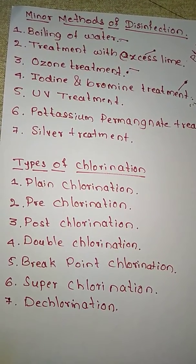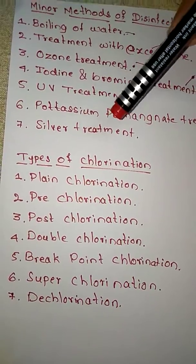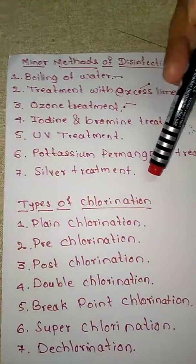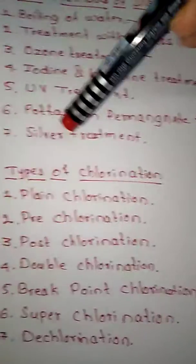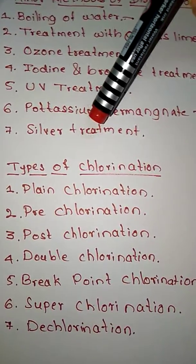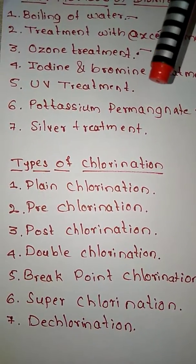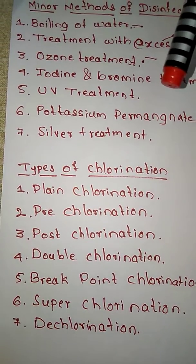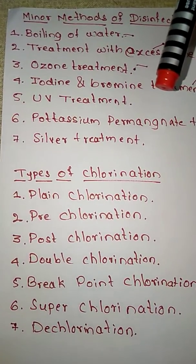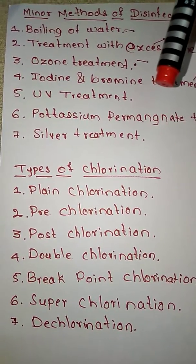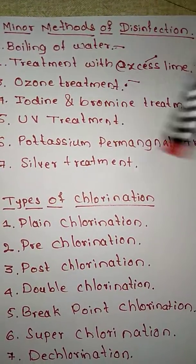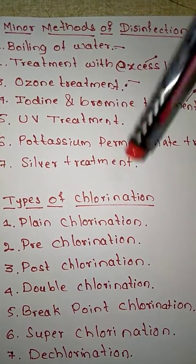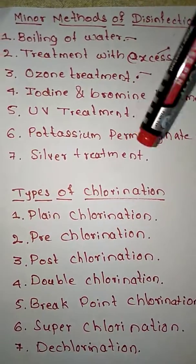The silver treatment method requires electricity — around 1.5 volts of current. Silver ions have a strong germicidal action and act as a disinfectant. However, like other minor methods, it does not take care of further contamination during distribution. For this reason, silver treatment is not used at a large scale.